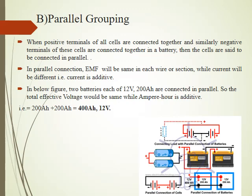Parallel grouping is done when the required amount of current by the load is more than the current rating of a single battery. When batteries are connected in parallel, one thing must be ensured — that the batteries being connected in parallel have the same voltage or EMF across their terminals. For example, two batteries of rating 12 volts, 200 ampere hours are connected in parallel. The resultant output of the combination will be 12 volts, 400 ampere hours.